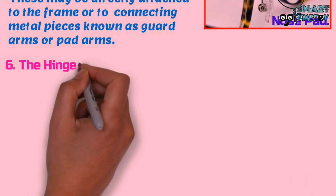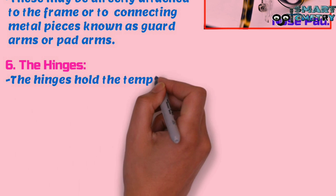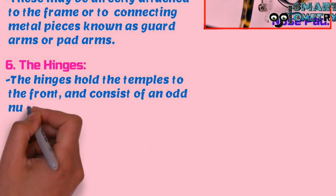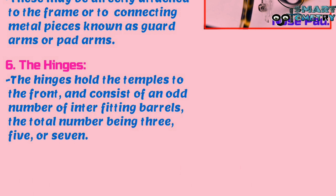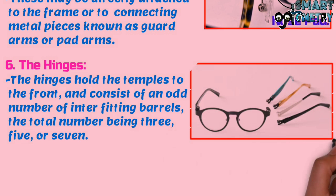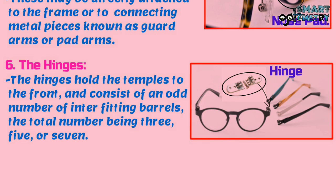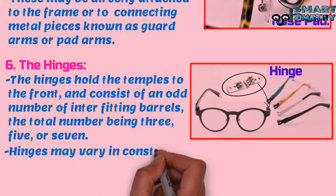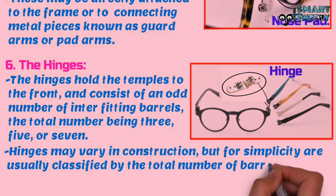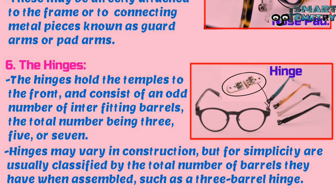Six, the hinge. The hinge holds the temple to the front and consists of an odd number of inter-fitting barrels, the total number being three, five, or seven. Here in this figure you can see the hinge. Hinges may vary in construction but for simplicity are usually classified by the total number of barrels they have when assembled, such as three-barrel hinge.